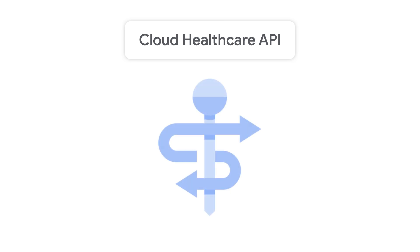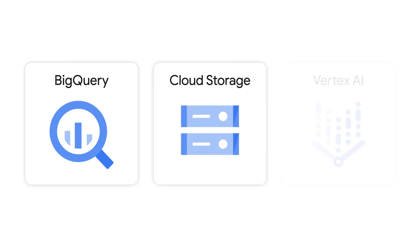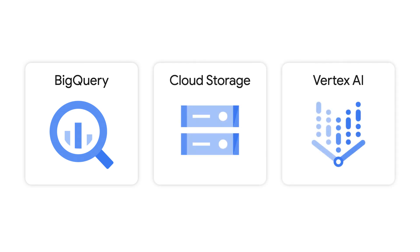As you can see, the Cloud Healthcare API provides a powerful platform to help you analyze medical imaging data. An important feature is that it integrates well with Google Cloud products like BigQuery, Cloud Storage, and Vertex AI, giving you new ways to gain invaluable insights about medical imaging data while complying with HIPAA and other government regulations.